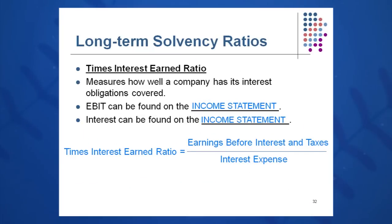Times interest earned is another long-term solvency ratio — it measures how well a company has their interest expense obligations covered. It's EBIT (earnings before interest and taxes) divided by interest expense. Both of these come from the income statement. Basically: do I have enough EBIT to cover my interest expense? Will profit before tax be positive? It's a coverage ratio.